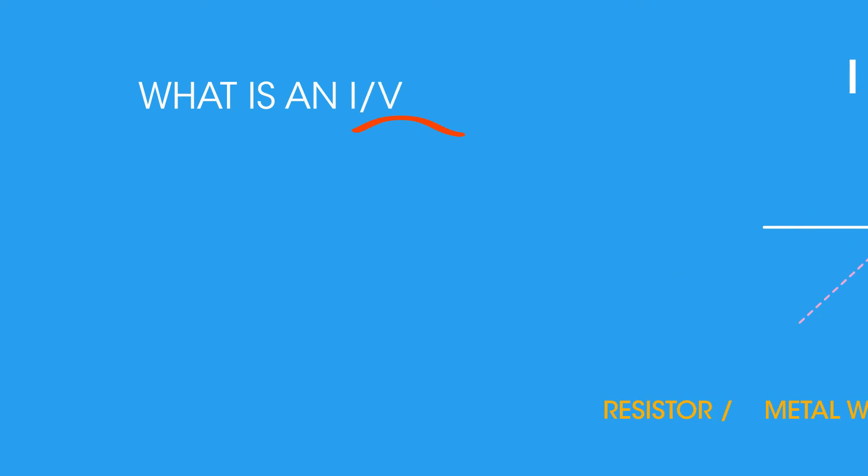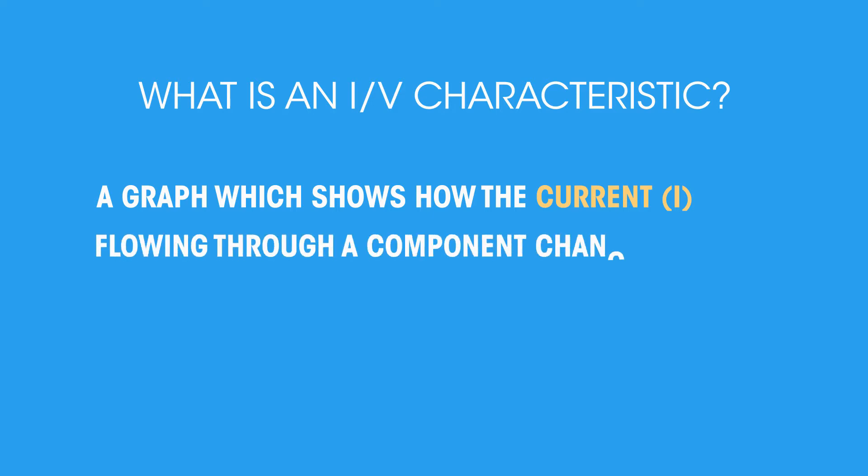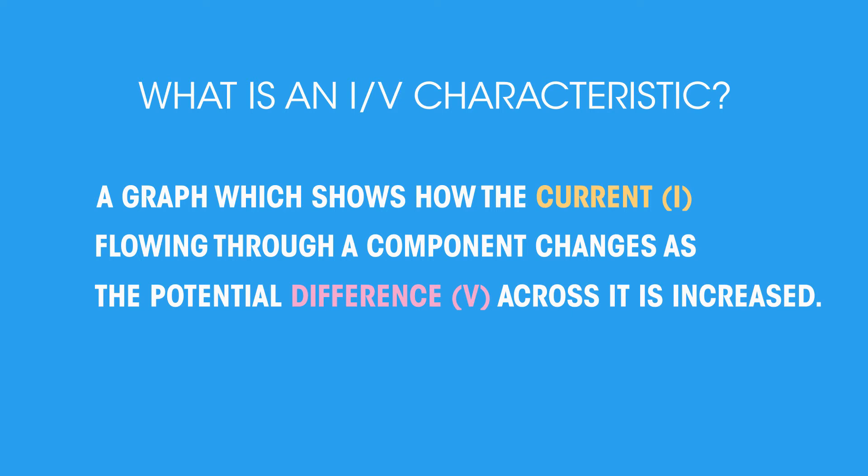So what is an IV characteristic? A graph which shows how the current I flowing through a component changes as the potential difference V across it is increased.